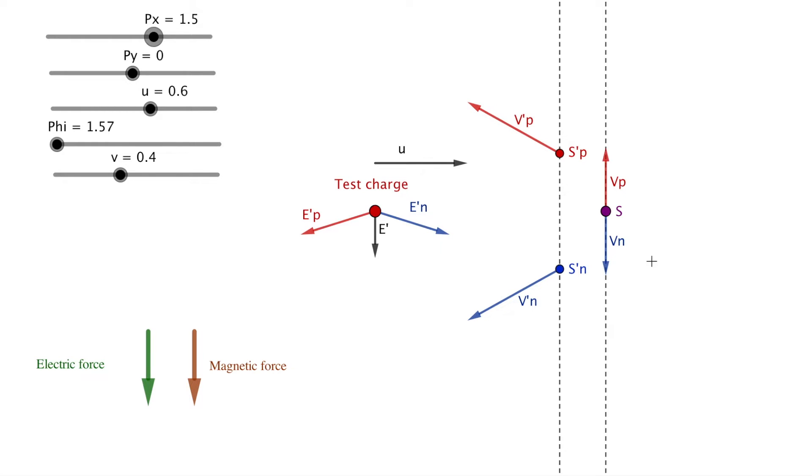What is important to understand here is that we're looking at an overlay of two systems. The elements with unprimed names are in the rest frame of the wire, while the primed elements are in the rest frame of the test charge. At position S are both the negative and positive charge. The vectors vp and vn show their respective velocities. Note that since the two charges are at the same position and have anti-parallel velocities, their electric fields will cancel each other out. The two dotted lines represent the wire in each of the two systems. In the primed system, the two charges are no longer at the same position, and we now see an x component in their velocities. The black vector u shows the velocity of the test charge in the unprimed system.